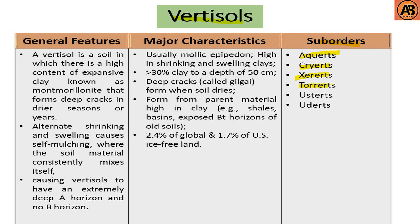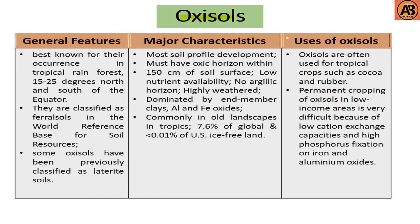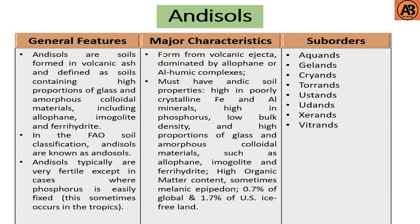The sub-orders of Vertisols are Aquerts, Cryerts, Xererts, Torrerts, Usterts, Uderts, etc. Here are the major characteristics and general features of Vertisols. Oxisols have no sub-orders, but their uses include tropical crops such as cocoa and rubber. Permanent cropping of Oxisols in low-income areas is very difficult due to low cation exchange capacities and high phosphorus fixation from iron and aluminum oxides.